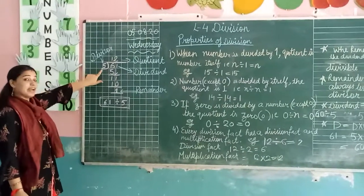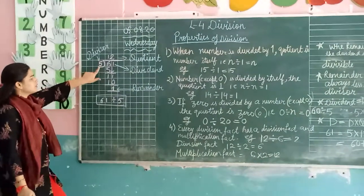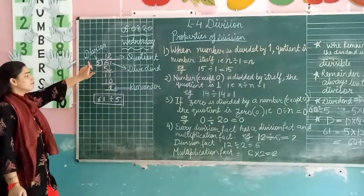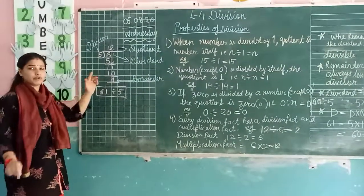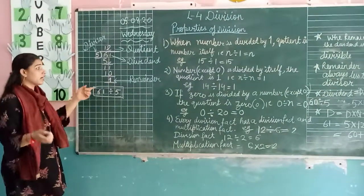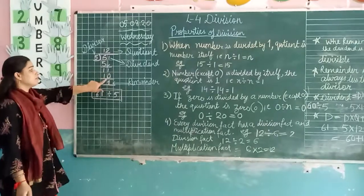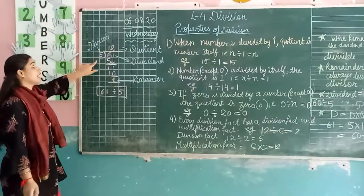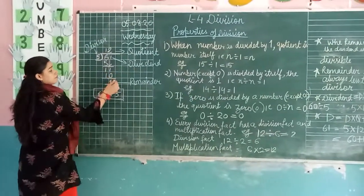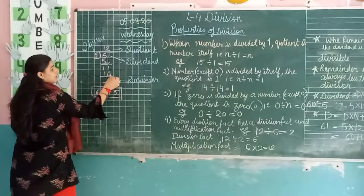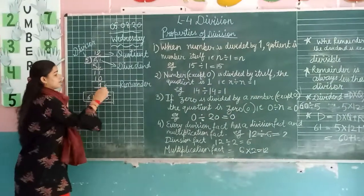Now we will count using the table of 5. 5 plus 5 is 10. 5 plus 10 is 15. So 15 brings us to 1.